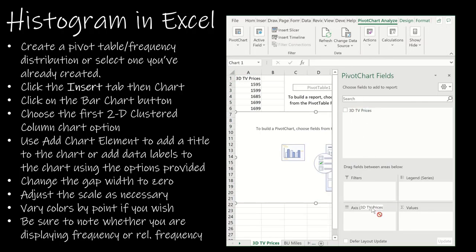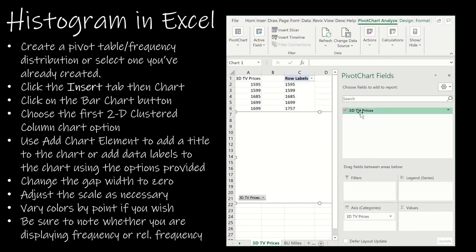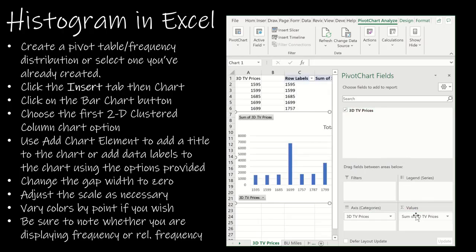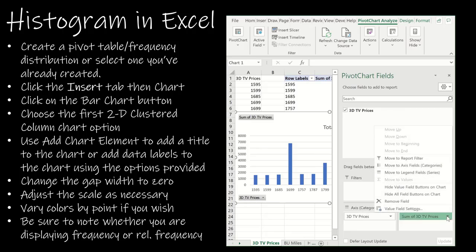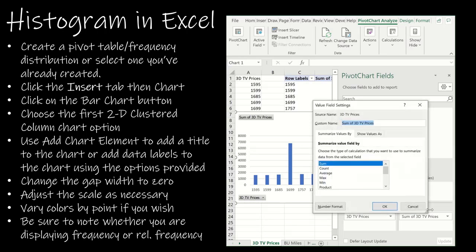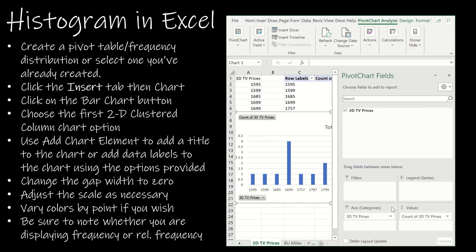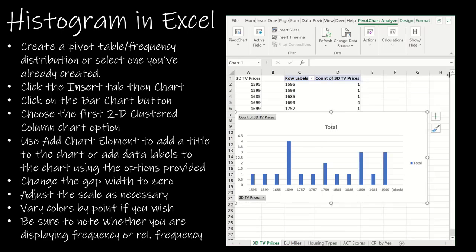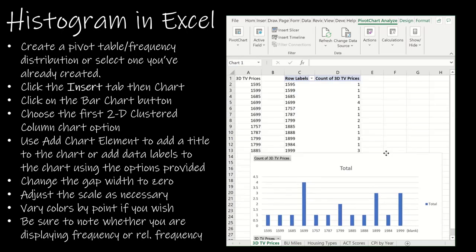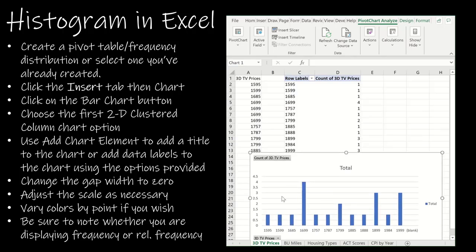So just as I did before, I'm going to take 3D TV prices and move it to both the axis and the values. And I'm going to change this to value field settings and count. And if I'm going too quickly for you through this part of it, just keep in mind that we've already done this in our frequency distribution video 2.1. So pretty much I have everything I need here. The great thing about this is notice it's already creating my histogram for me.